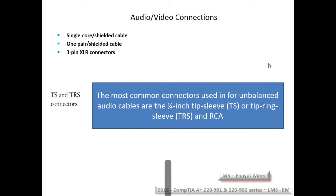Audio connections also include three-pin XLR connectors. The most common connectors used for unbalanced audio cables are the quarter-inch Tip Sleeve (TS) and Tip Ring Sleeve (TRS), as well as RCA. These are very commonly used audio connection types.